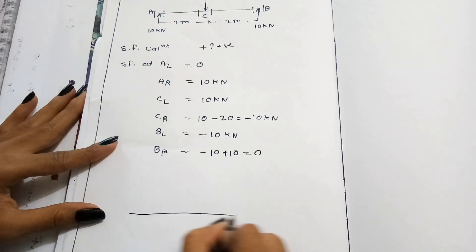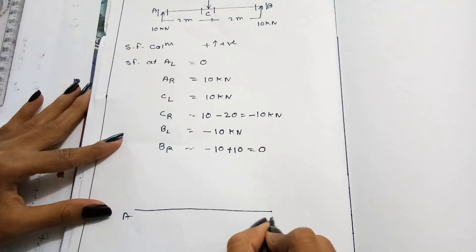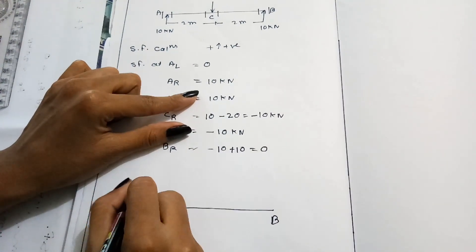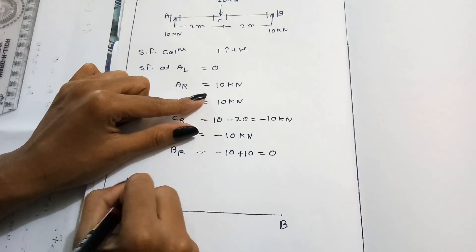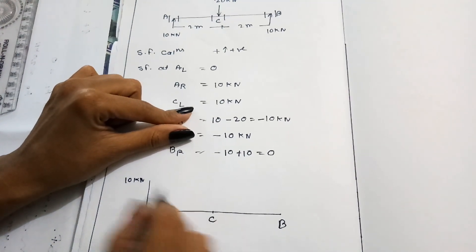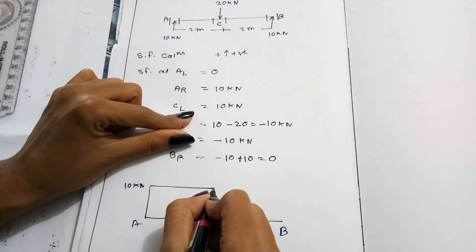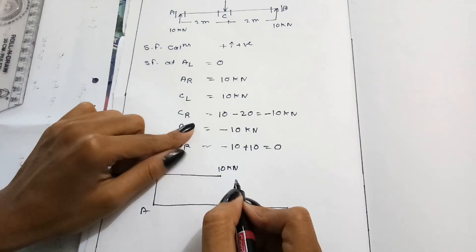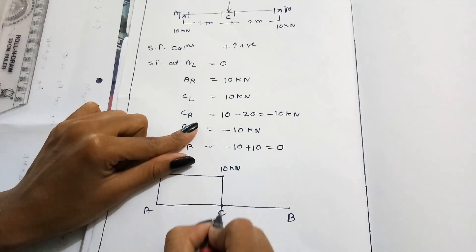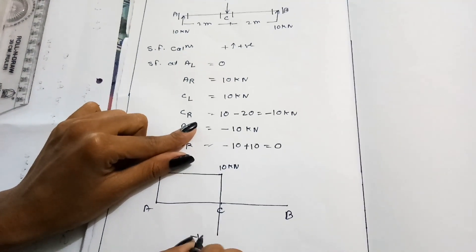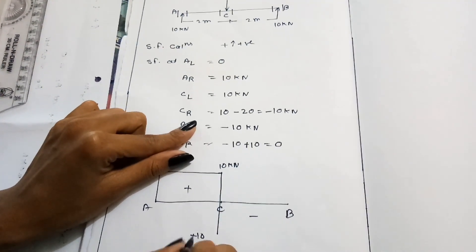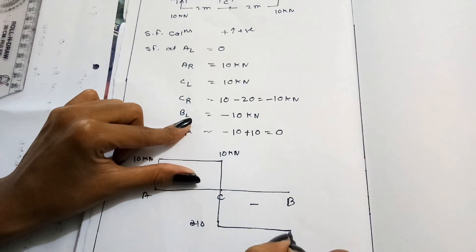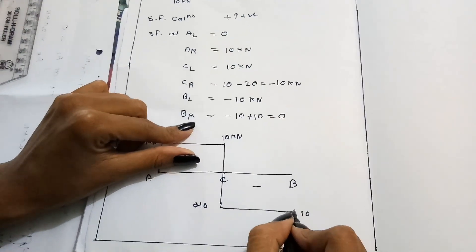Draw the baseline for beam AB. At A-left the value is 0; at A-right it is 10 kN — draw a straight line at 10 kN. At C-left it remains 10 kN. At C-right it becomes minus 10 kN — this side is positive and this side is minus 10. At B-left it is minus 10, and at B-right it returns to 0. This is the shear force diagram in kN.